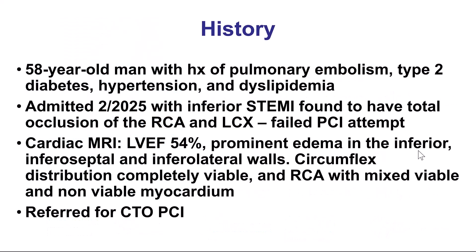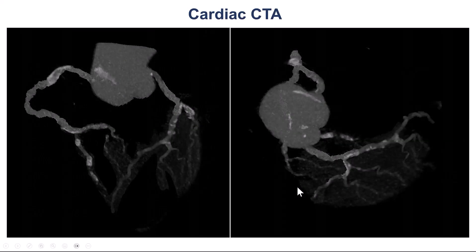The patient was a young gentleman with multiple comorbidities who came with inferior STEMI and had an unsuccessful attempt for PCI. He subsequently had a cardiac MRI that showed edema in the inferior, inferior septal, and inferior lateral with viability in the circumflex and mixed viability in the right coronary territory, and he was sent for PCI of the right coronary artery CTO. This was the coronary CT.